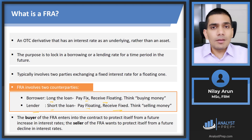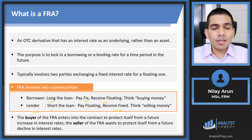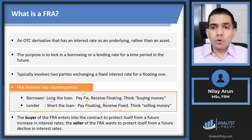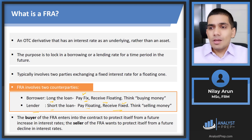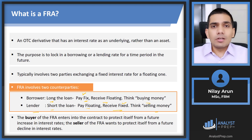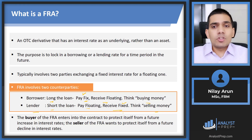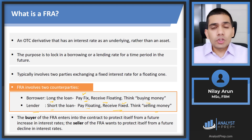To summarize: long is the party paying fixed and receiving floating; short is the party paying floating and receiving fixed. The main rate that matters is the FRA rate — the fixed rate. The floating rate comes in when we need to calculate the payoff or profit and loss to the position. The long expects rates to go up; the short expects rates to go down.